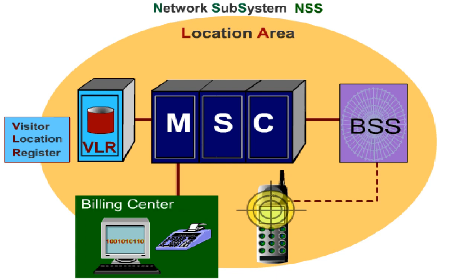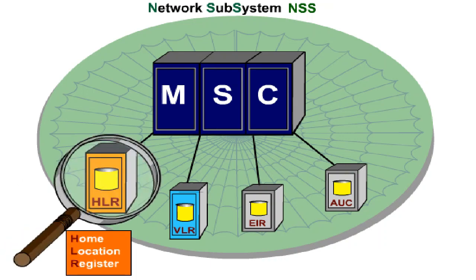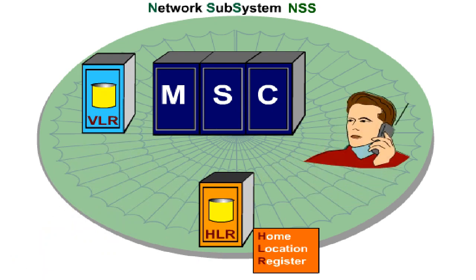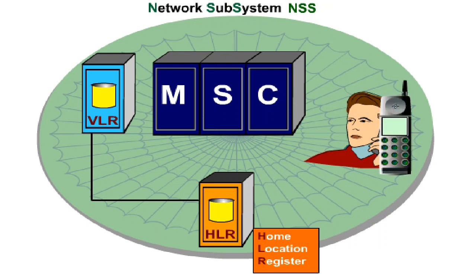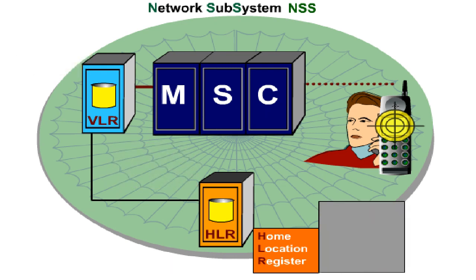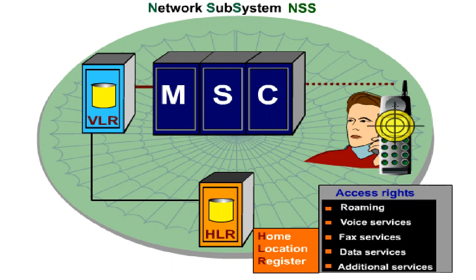For GSM customer data acquisition, there is a register called the Home Location Register, HLR, in which each network operator registers the customer data necessary for dealing with traffic. The HLR supplies these data to all VLRs in which the GSM customers are found at any given moment. Inversely, the VLR informs the HLR of the location area of the customer, and is thus able to give routing information when calls come in. The HLR data contain information on access rights with regard to roaming, service rights with regard to voice, fax, and data services, and additional subscribed services.